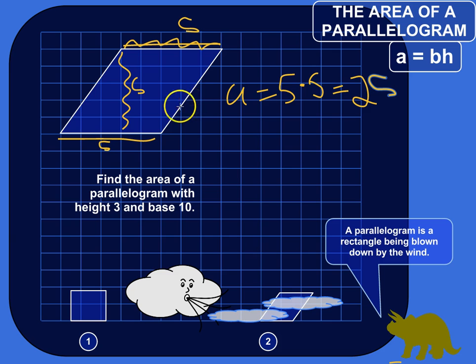And a way that I use to remember the area formula for a parallelogram is to think of a parallelogram as just a rectangle that's kind of flopped over in the wind. And the area of a rectangle is just the base times the height, or you can think of it as the length times the width, or we can call it base times height. And then just because it's flopped over to the side like that doesn't mean its area has changed.